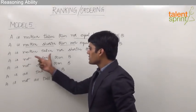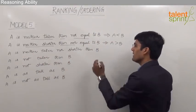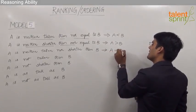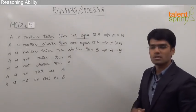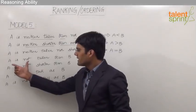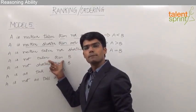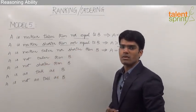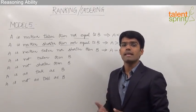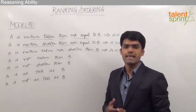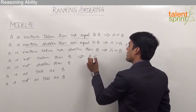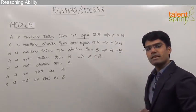When the statement says 'A is neither taller nor shorter than B,' we can understand that A is as tall as B, or A is equal to B. Moving on, the statement 'A is not taller than B' has two possible cases: A can be shorter than B, or A can be as tall as B. So we can say A is shorter than or equal to B — that is, A is less than or equal to B.